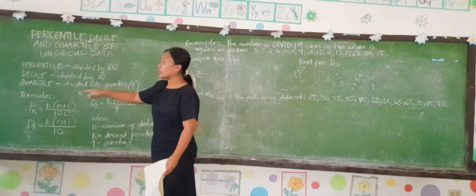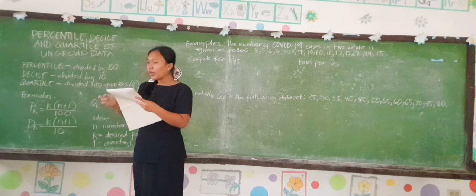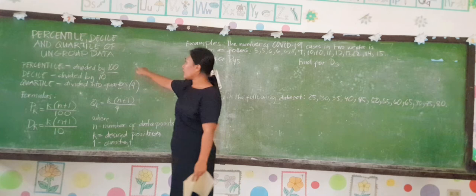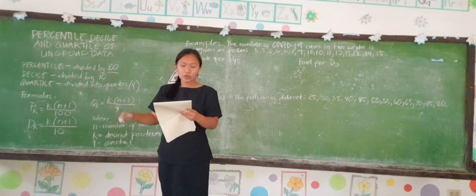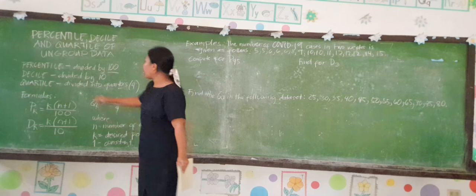So first, what is percentile? Percentile is an extension of the median concept where the data set is divided into 100 equal parts. Decile is also an extension of the median concept where the distribution is divided by 10.